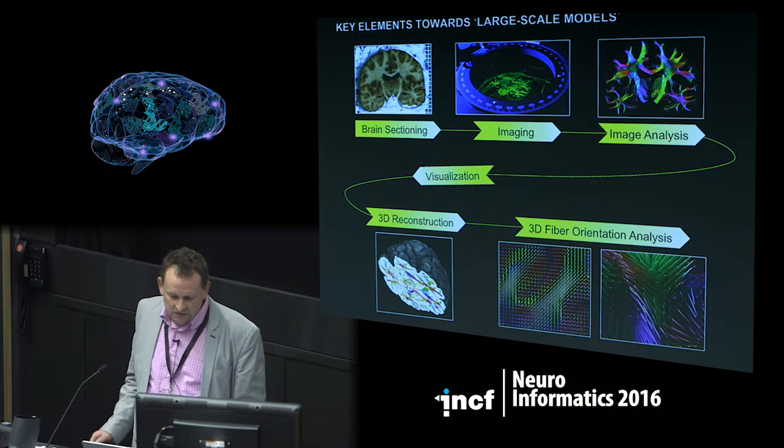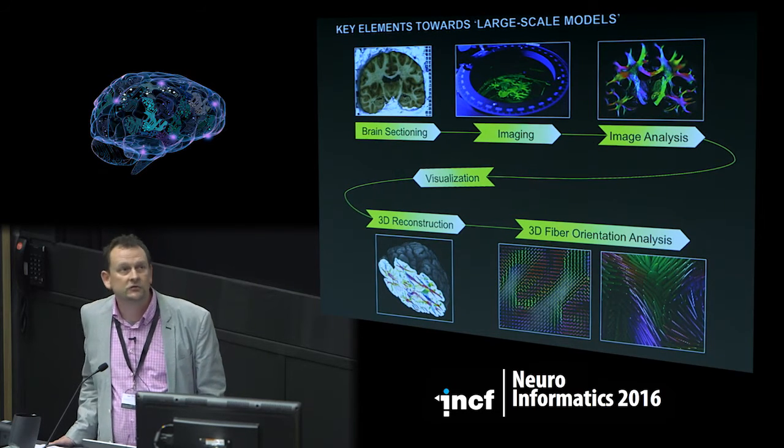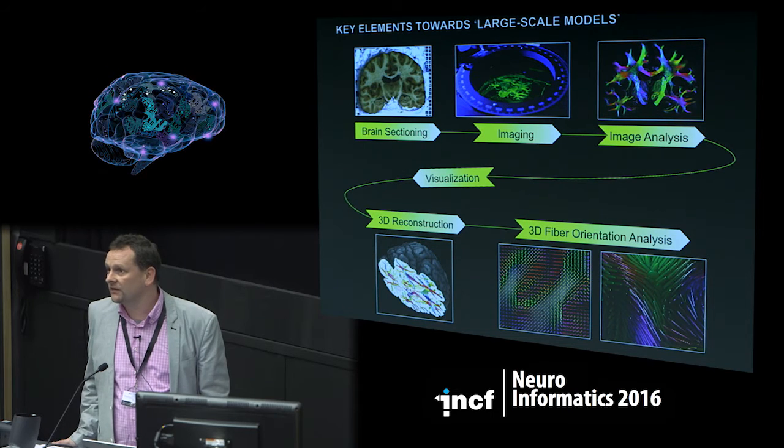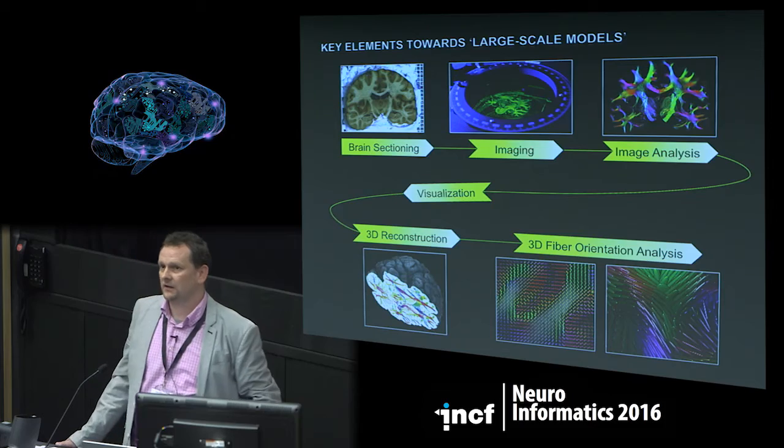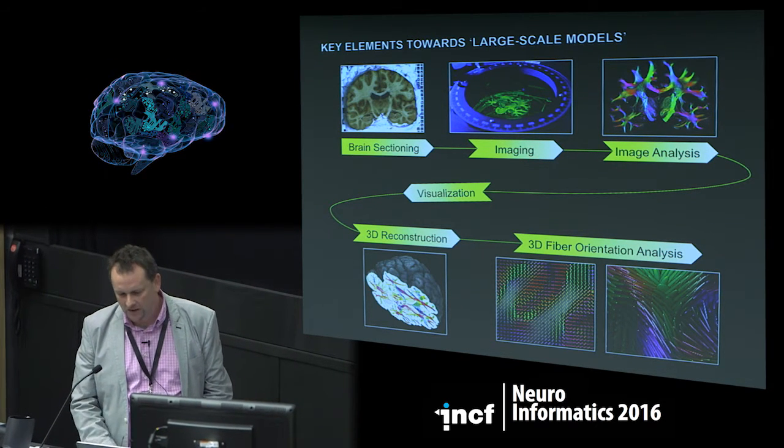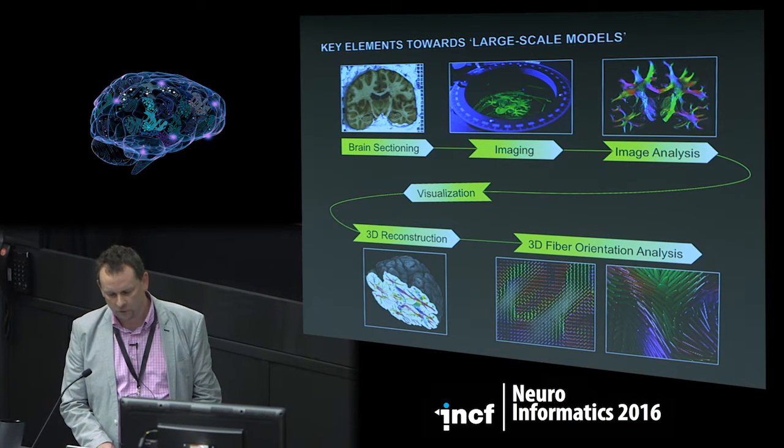The key elements are quite simple: you need the right technique to section the brain, you have to deal with the imaging technology, and for polarized light imaging we need a very specific type of image analysis. Visualization becomes more and more important, especially for high-resolution datasets, but it's also getting more challenging to visualize all the details we can reveal. The next step after single section analysis is 3D reconstruction, and afterwards we can start 3D fiber orientation analysis.